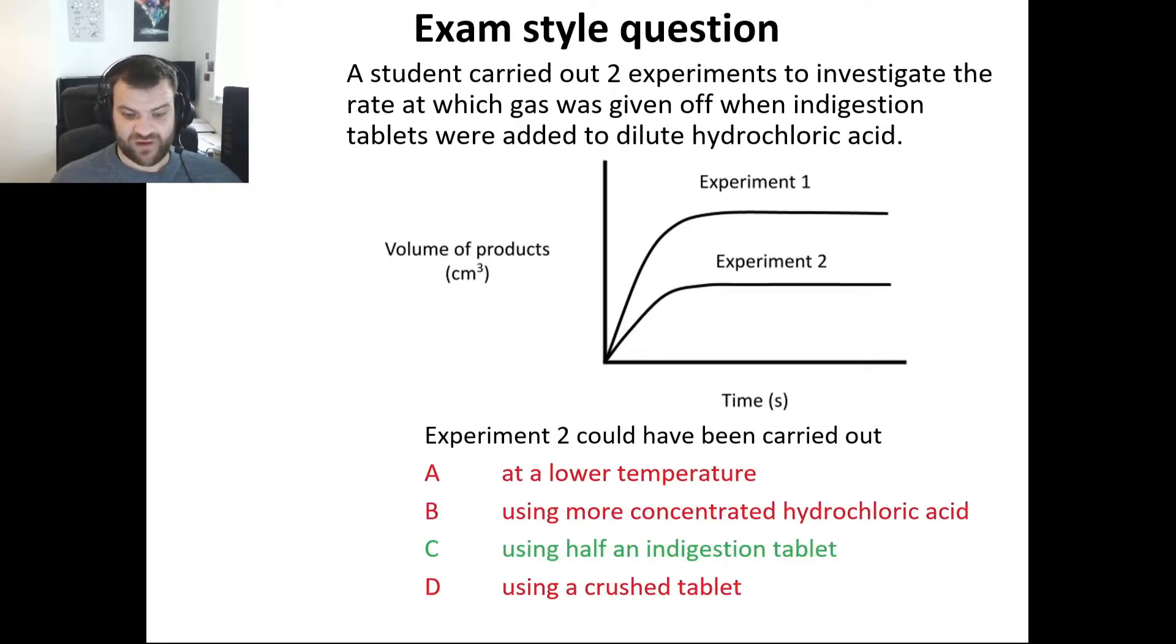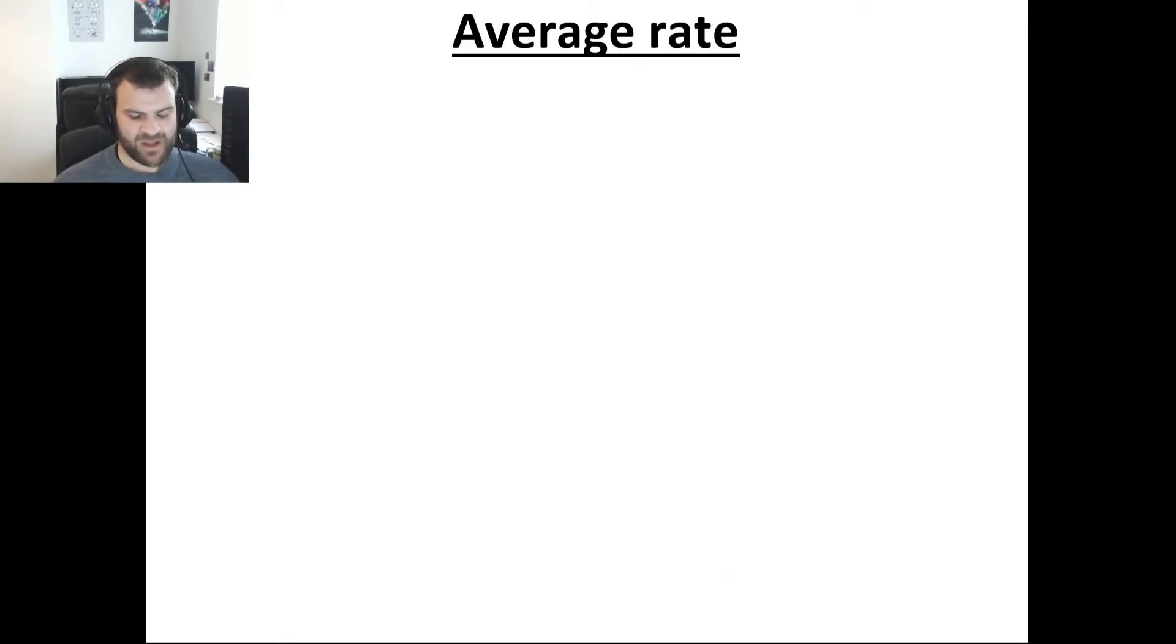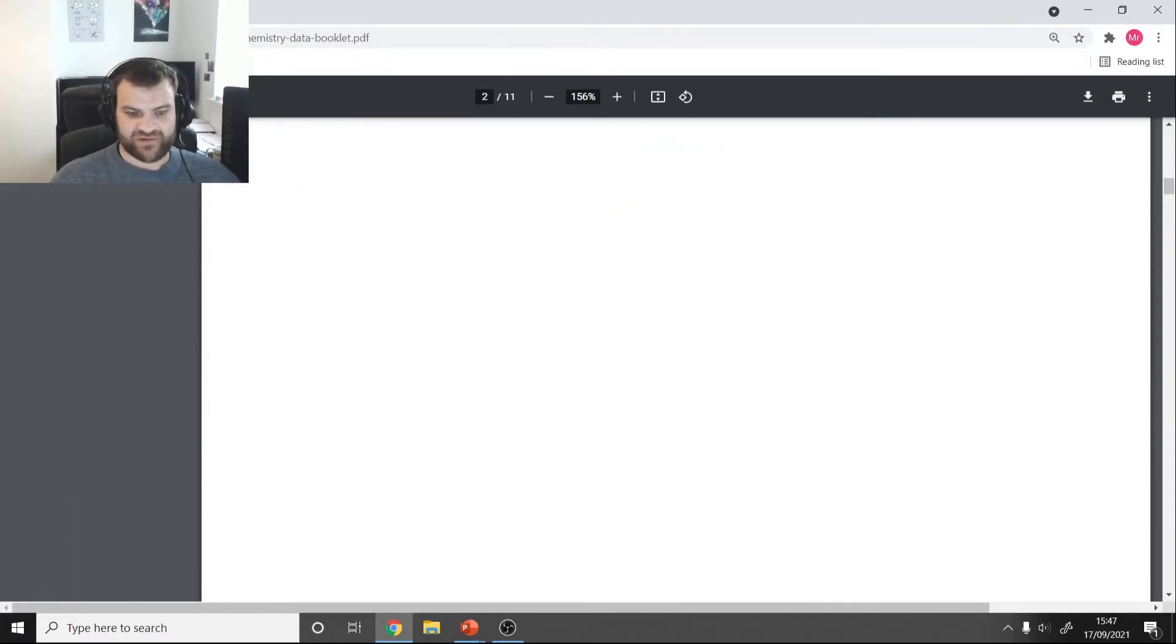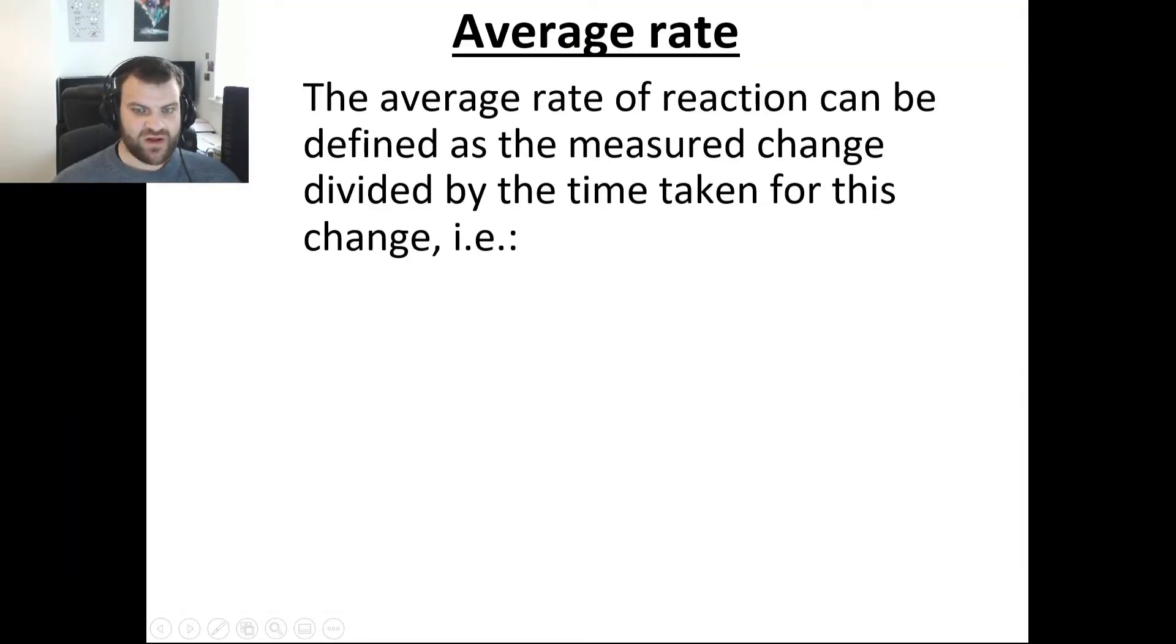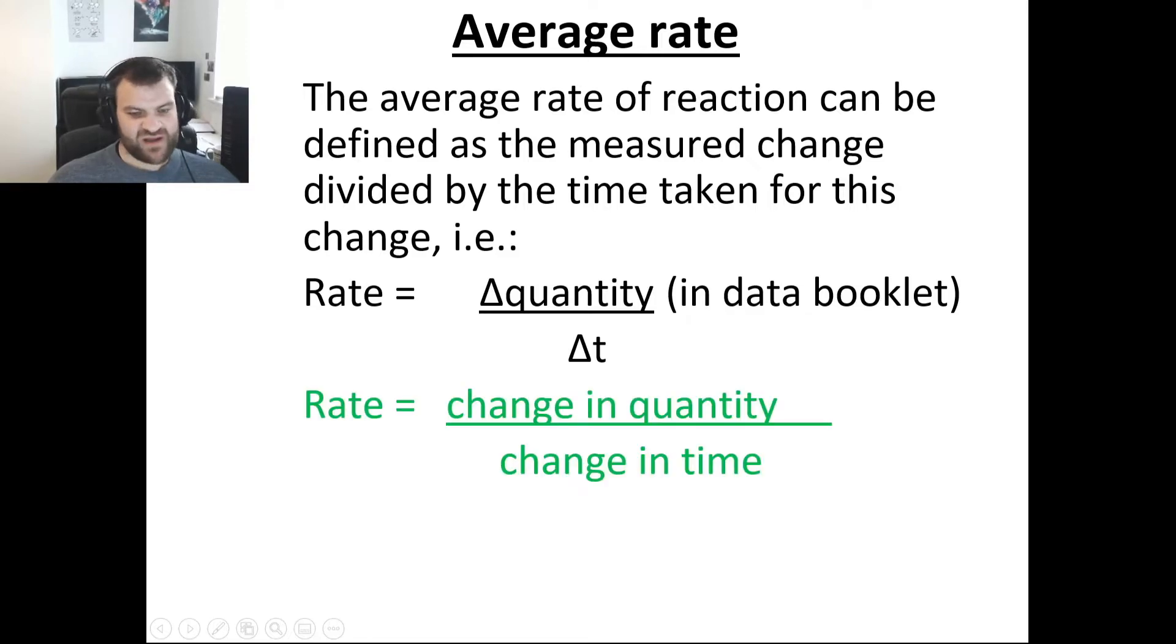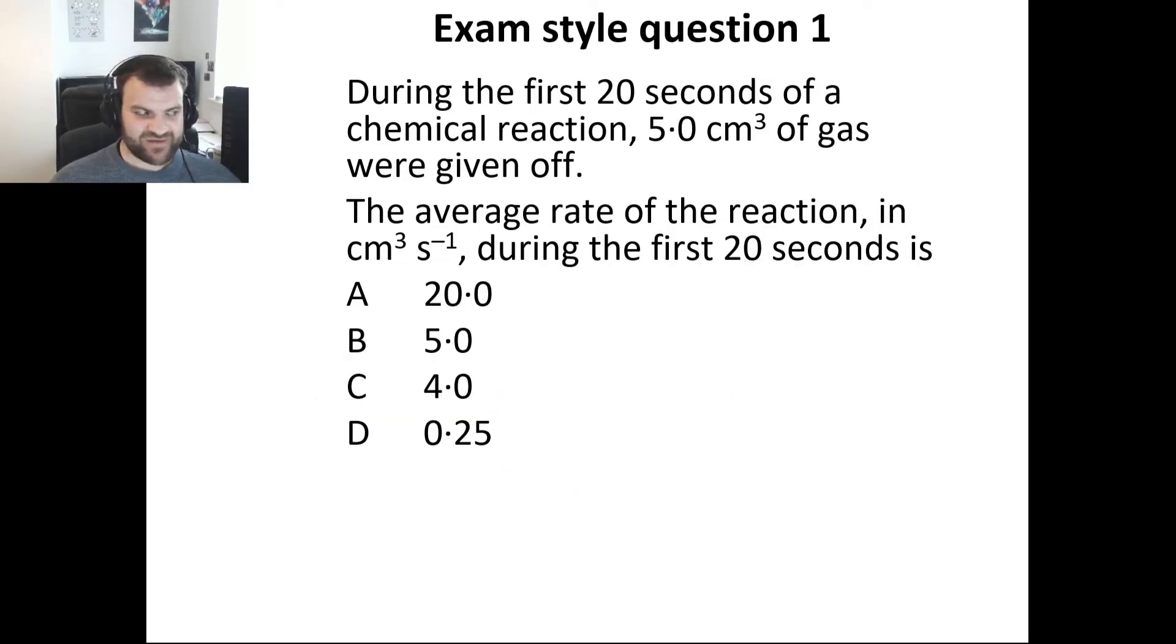Moving on to average rate. If you at any point have forgotten how to calculate average rate, luckily in the data booklet on page number three we have our relationship that tells us the average rate equals the change in quantity over change in time. The average rate, we're looking at how much it's changed by in the particular time and we're going to divide the change by the time. You'll see it represented with the delta symbol which just means change, so rate is the change in quantity divided by the change in time.